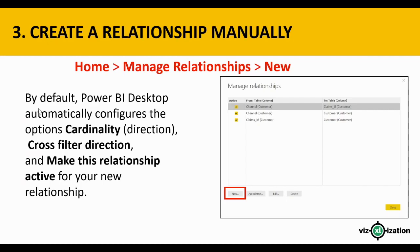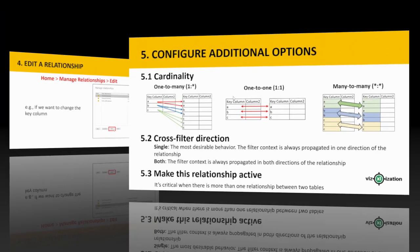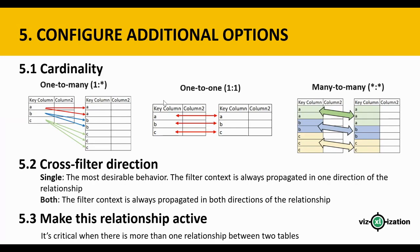To edit a relationship, the steps are very similar: Home > Manage Relationships > Edit. We use this option, for example, if we want to change the key column — say two tables have more than one key column and we want to change which key column links them.